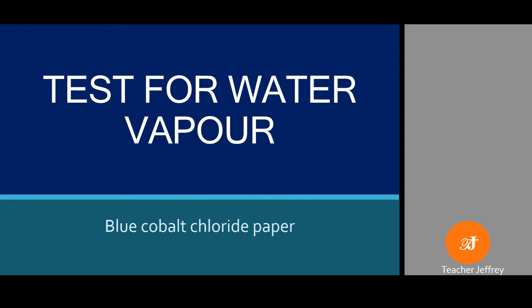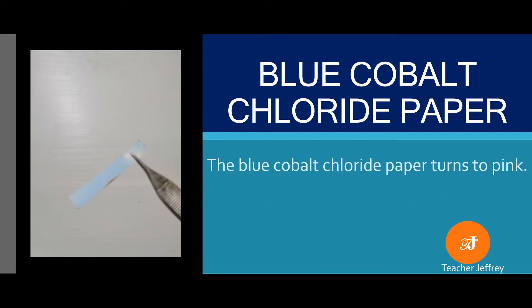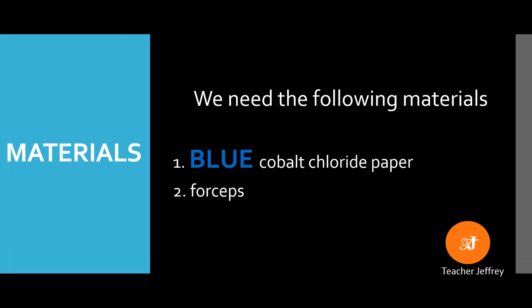This is a blue cobalt chloride paper. We will use this paper to test for the presence of water vapor in air. If water vapor is present in air, the blue cobalt chloride paper turns pink.